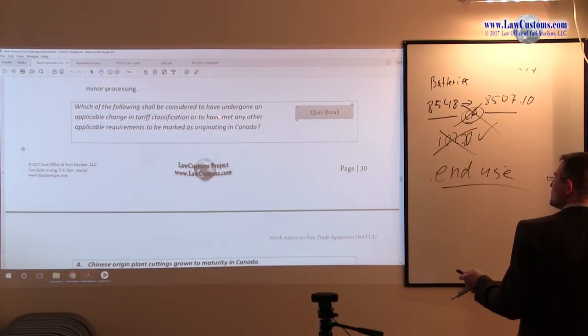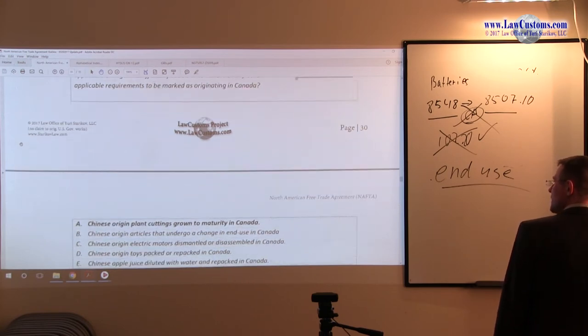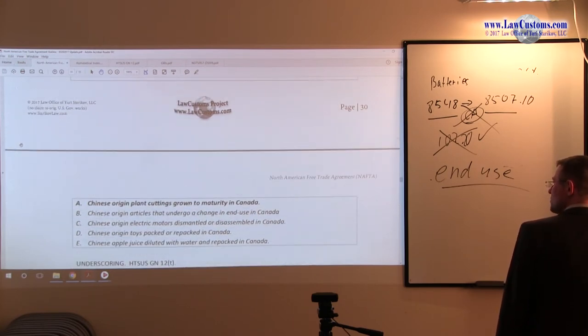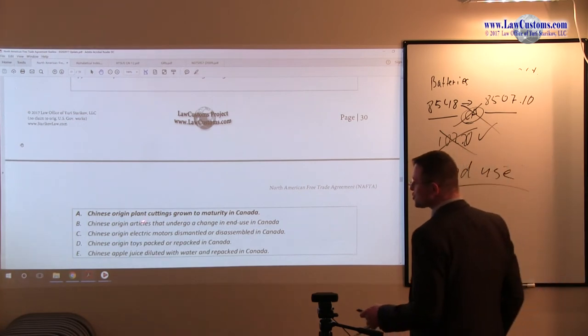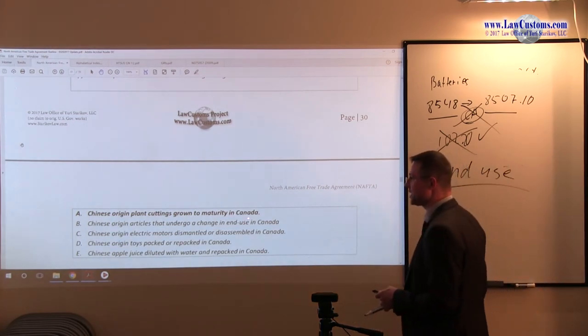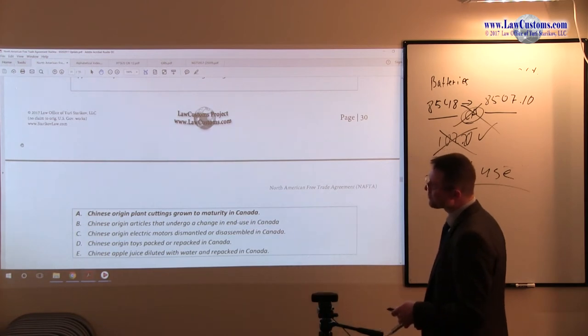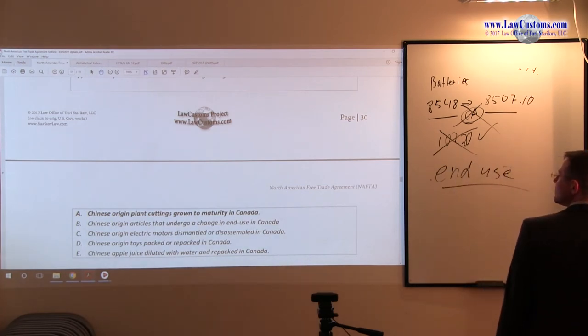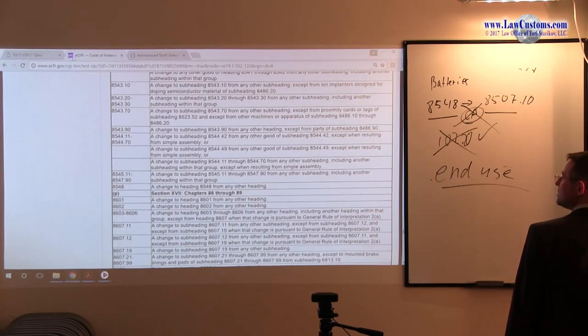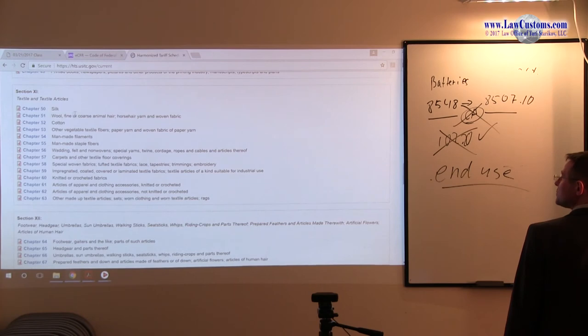Which of the following should be considered to have undergone applicable change in tariff classification that have been marked as originating in Canada? Chinese origin plant cutting grown to maturity in Canada. So, plant cuttings. And one good example, one good example would be, let me go to the harmonized tariff schedule and put in one number.